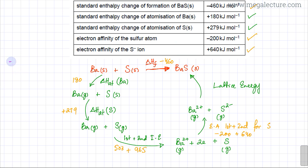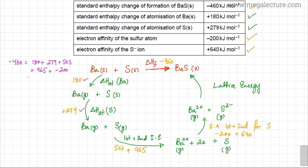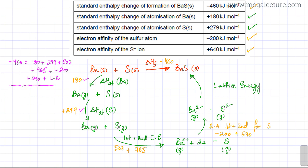So the equation is: −460 = 180 + 279 + 503 + 965 + (−200) + 640 + LE. Summing all these values gives us the equation we need to solve for lattice enthalpy. Using a calculator, I'm going to figure out the value of lattice enthalpy.